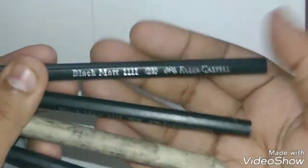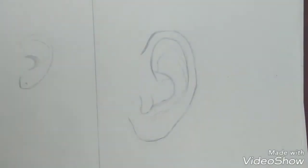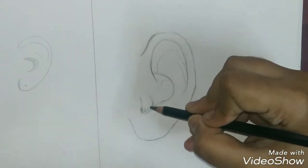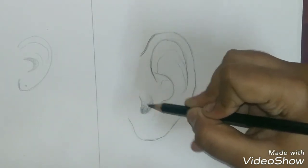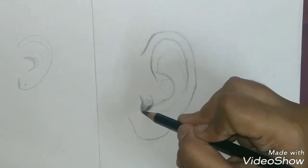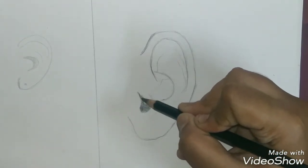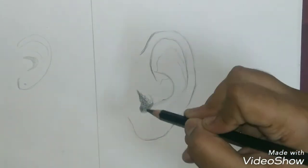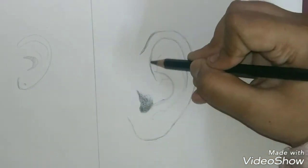I'm going to list all these products in the description down below, so you can go check them out. I'll be listing some links from where you can buy this product, so do check the description and the links. Okay, so we'll start by shading the inner parts, the darkest parts of the ear.